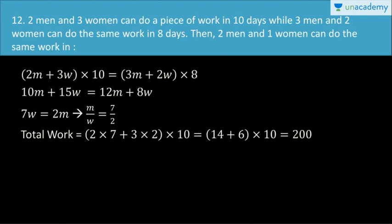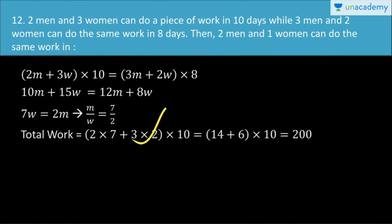Solving, M by W is equal to 7 by 2. We will find the total work. We have a single condition. Using M equals 7 and W equals 2: 2 into 7 gives 14, and 3 into 2 gives 6. That is 14 plus 6 equals 20. The total work is 200.